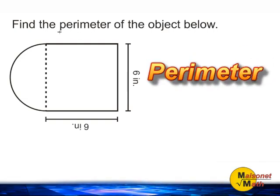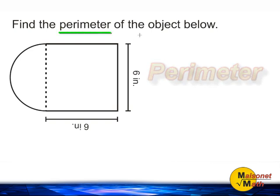In this problem we are trying to figure out what is the perimeter of the shown object. To find the perimeter of any object is to find the distance all the way around that object. So we must find the distance of each side and add the length of those sides together.